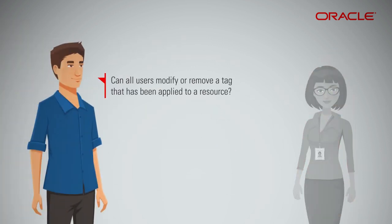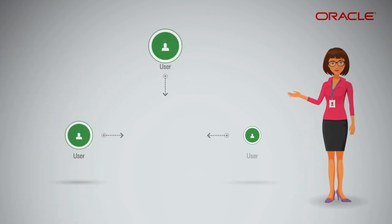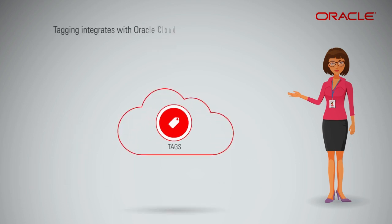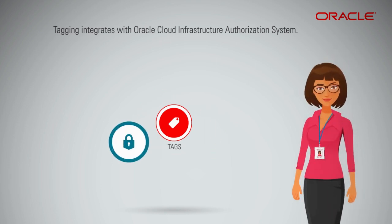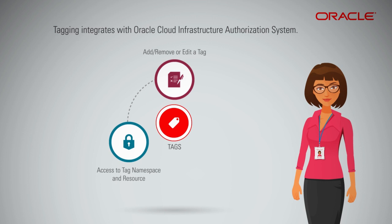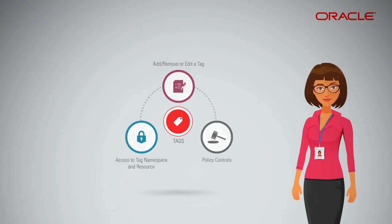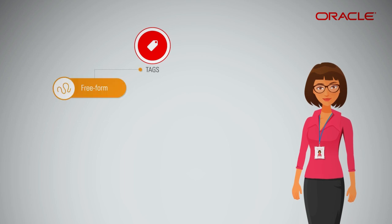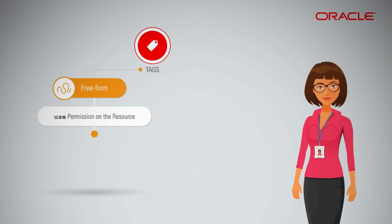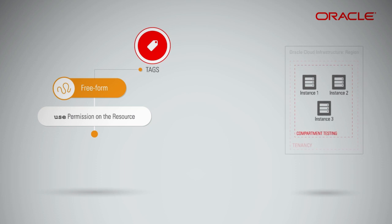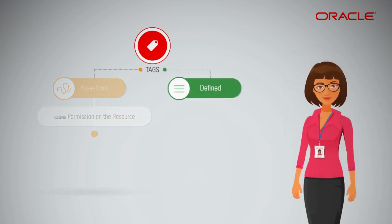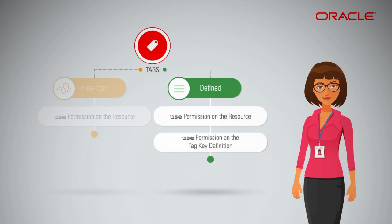Can all users modify or remove a tag applied to a resource? Not all users can manage tags. Tagging integrates with Oracle Cloud Infrastructure's Authorization System. Only if you have use or manage access to the tag namespace and the resource can you add, remove, or edit the tag on that resource. Permissions to apply, update, and delete freeform tags are included in the use permission for the resource — users who can use instances in compartment 'testing' can also apply, update, or delete freeform tags on those instances. For defined tags, users must be granted the use permission for the defined tag and must also have the use permission for the resource.